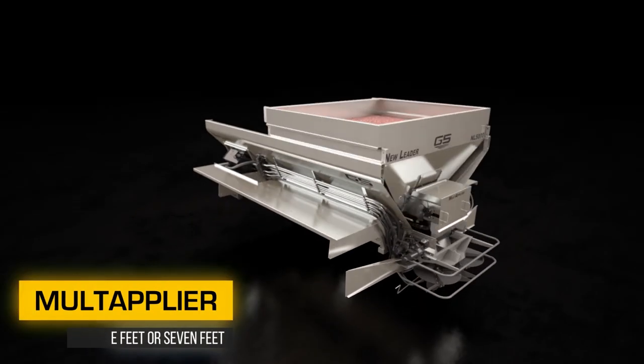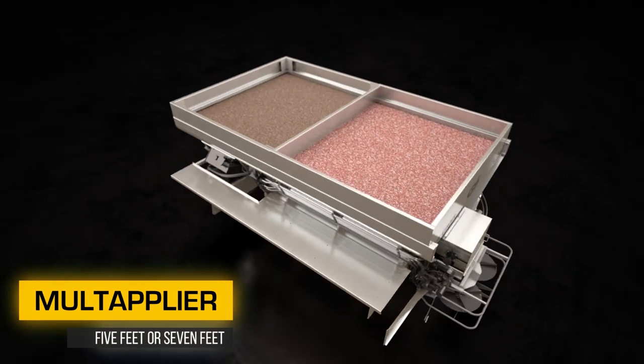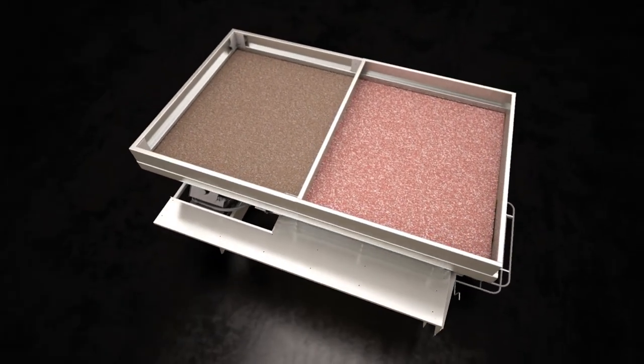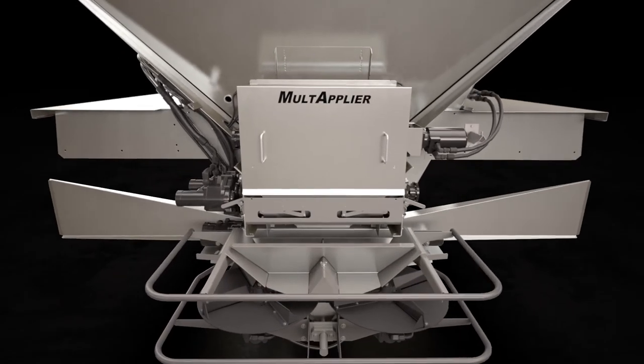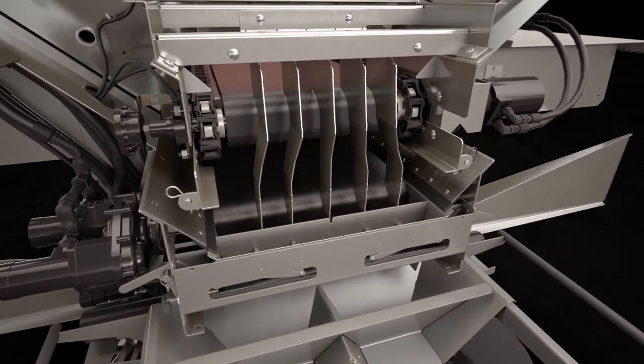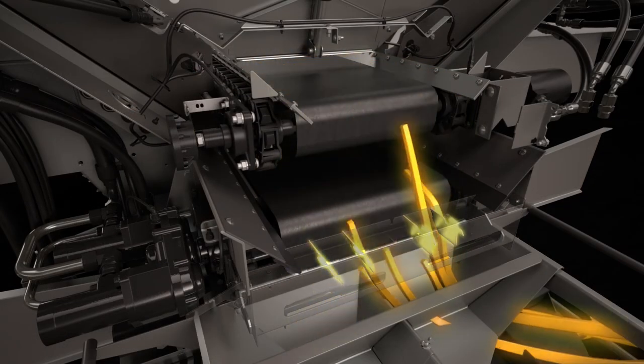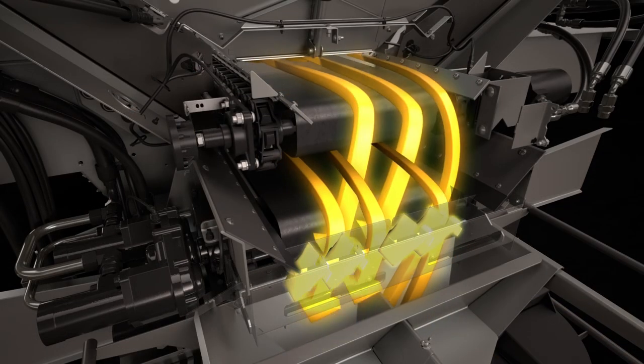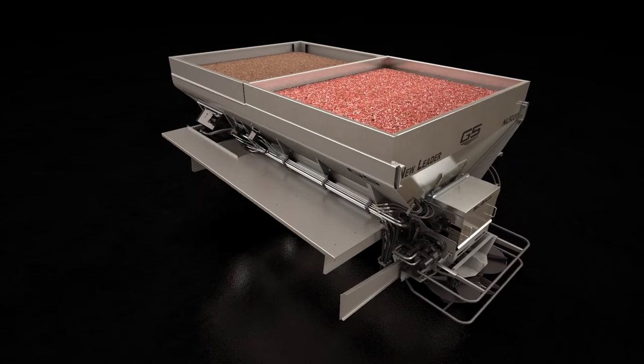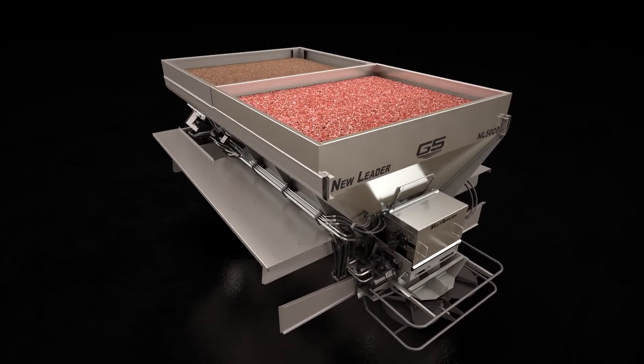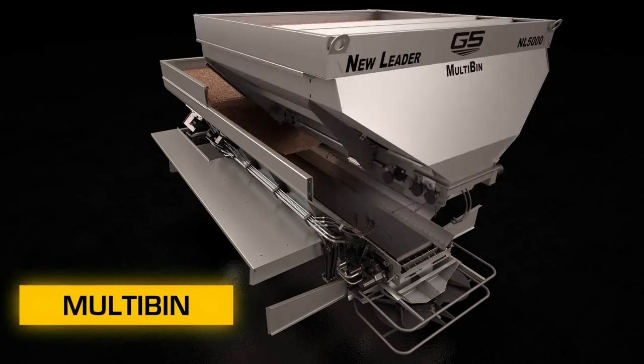Inserting a multiplier increases productivity and reduces operating expenses by allowing you to spread up to two products simultaneously or independently at variable rates in one pass. An improved waterfall divider and matched rate output are standard and support even higher rates of output. Including micronutrients, the multi-bin can spread up to four products in one pass.